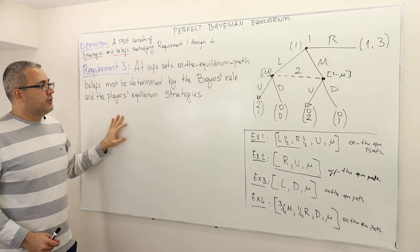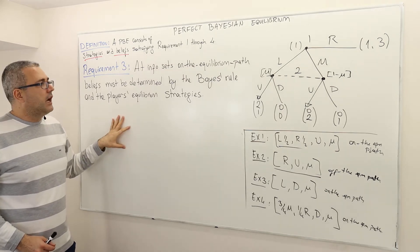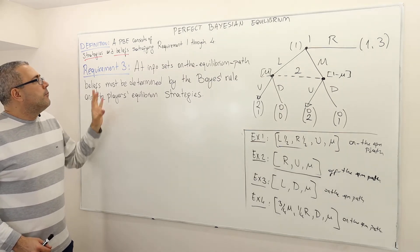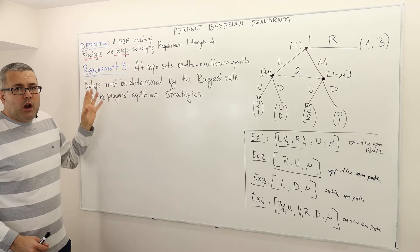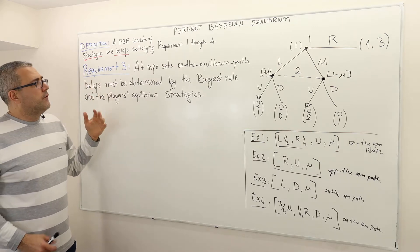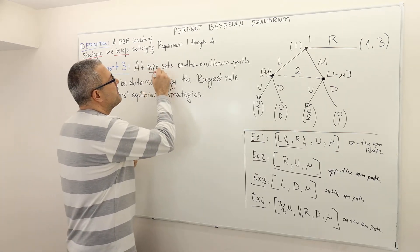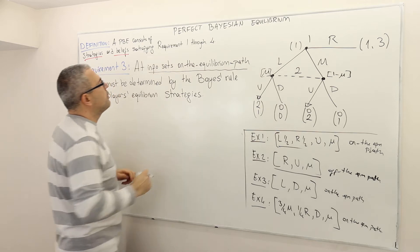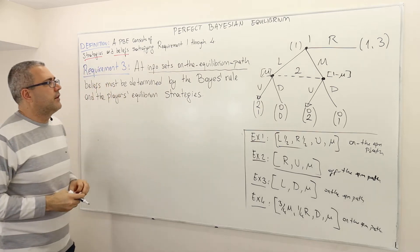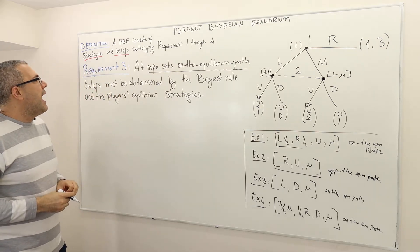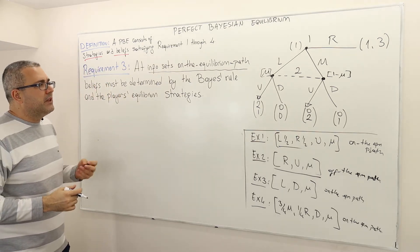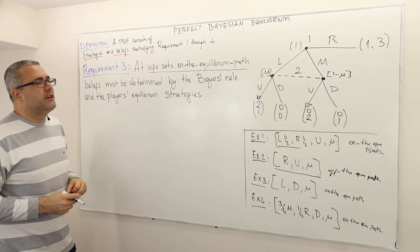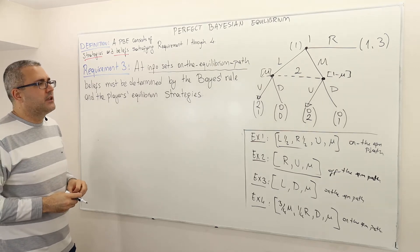It's short, but it actually requires a lot. Requirement three is about information sets that are on the equilibrium path, and what the beliefs should be or can be at those information sets.